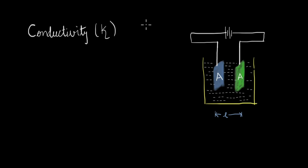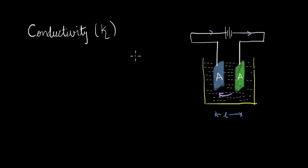In an earlier video, we looked at conductivity to help us understand how the flow of electrons takes place in the solution of an electrolytic cell. Now because the actual charge transfer happens via ions, the number of ions in the solution — or the concentration of ions — is an important factor that will affect the conductivity. So we want to know how conductivity changes when we change the concentration of the solution.